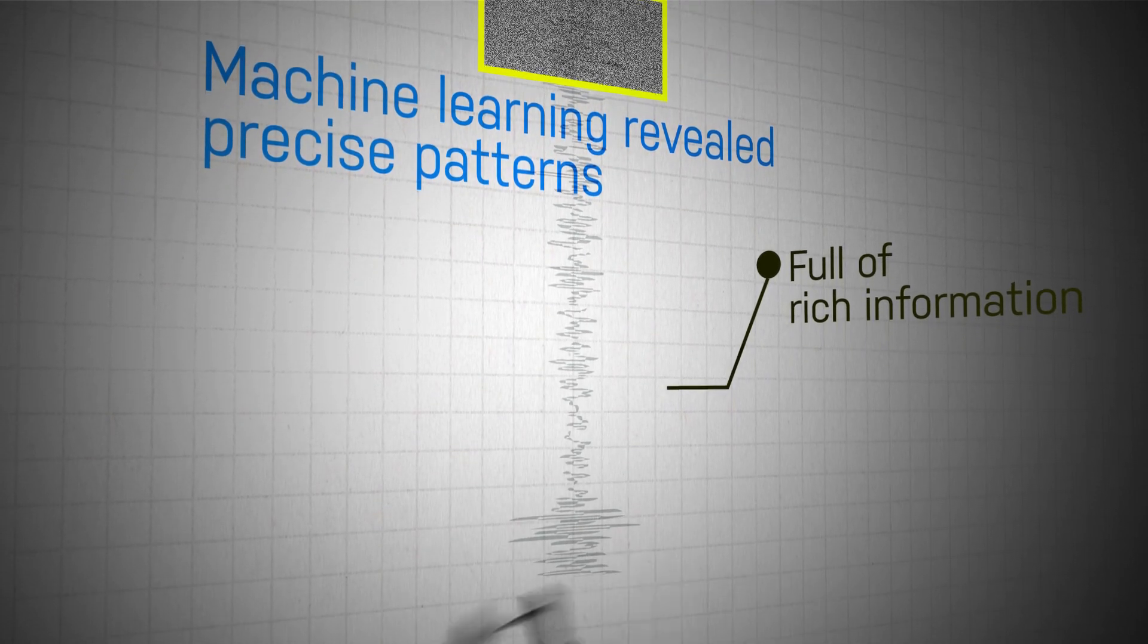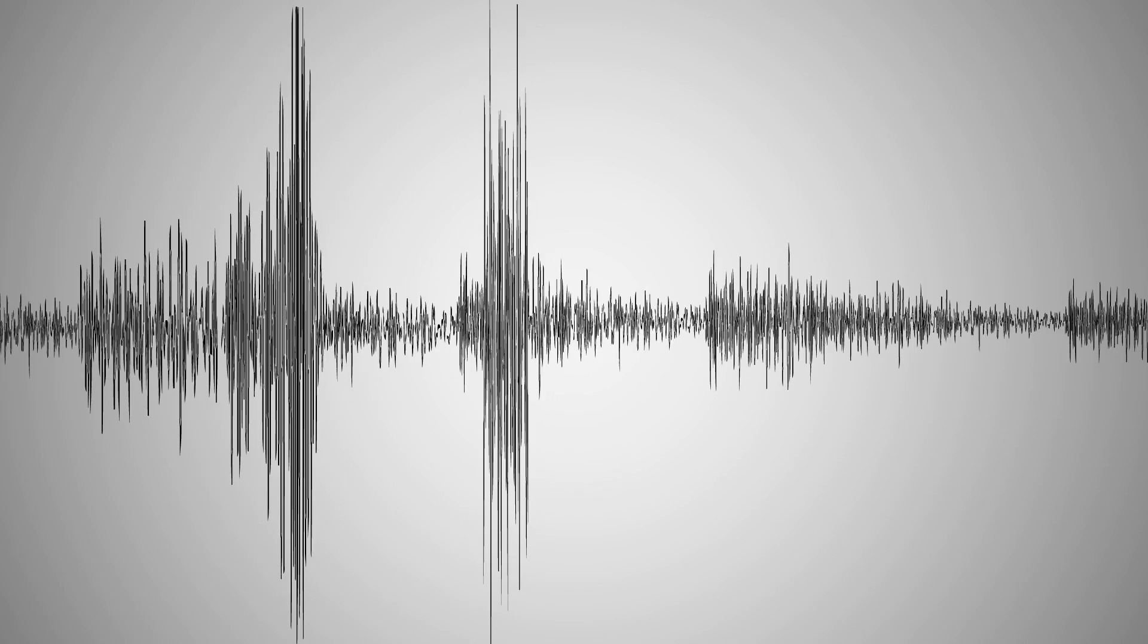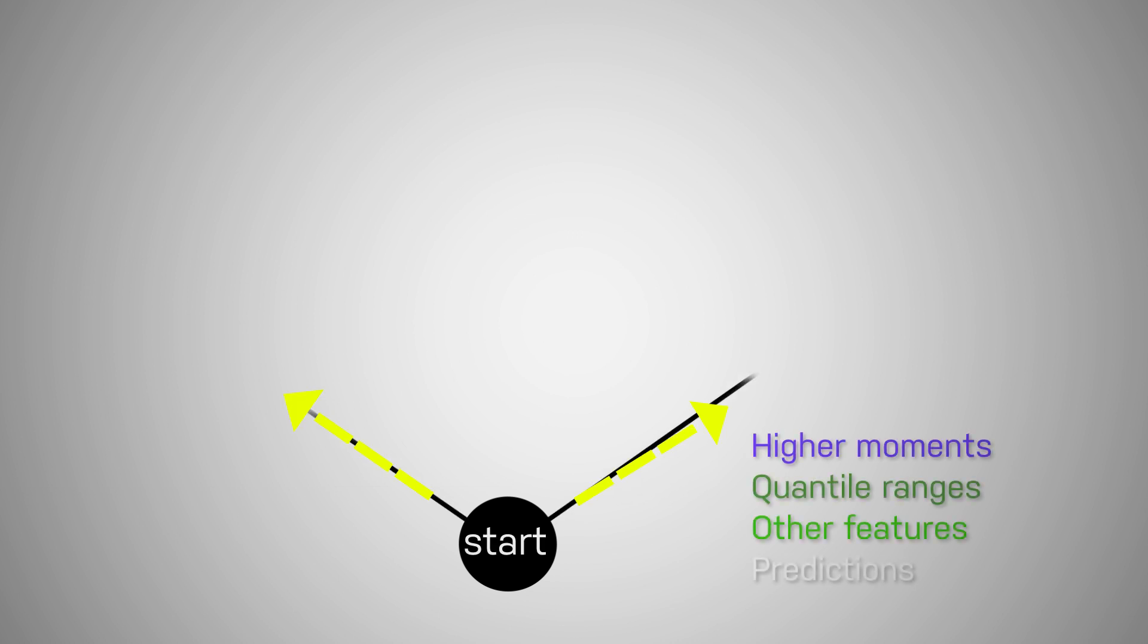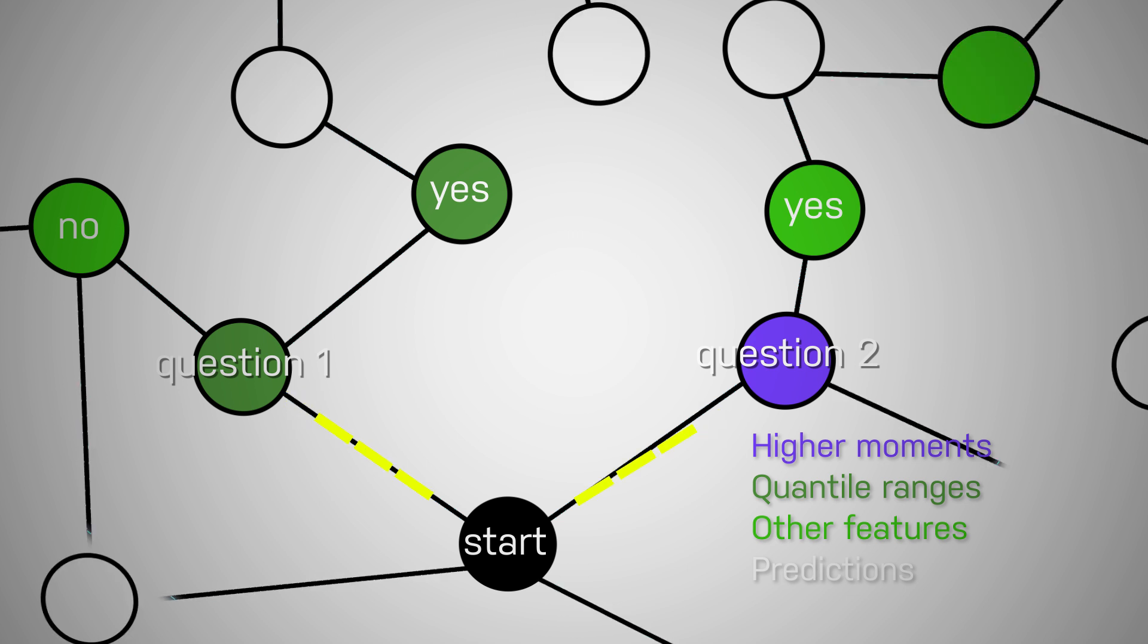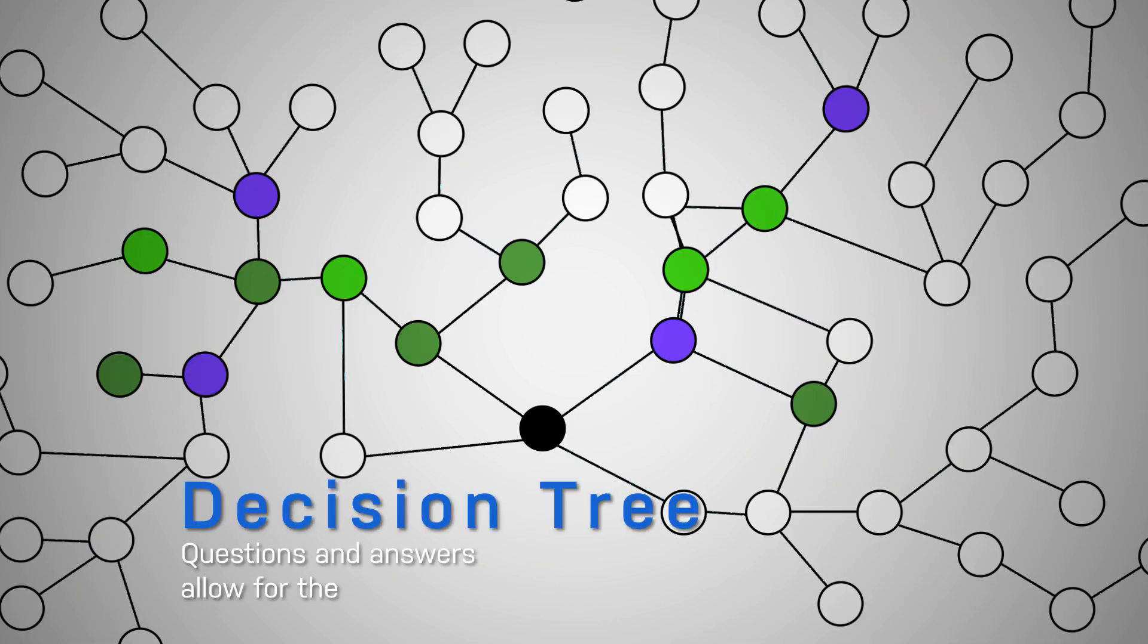Machine learning crunches massive amounts of seismic data to find distinct patterns. The computer program creates decision trees that select and retest a series of questions and answers. Based on the answers, the program adjusts itself. Then it continues its rapid march through the data. That's machine learning.